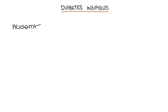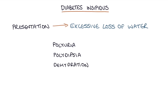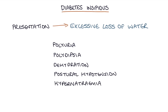The presentation is all linked to the excessive loss of water in the urine, so patients have polyuria or excessive urine production, polydipsia or excessive thirst, dehydration, postural hypotension so their blood pressure drops as they stand up, and if you check their blood tests they'll also have hypernatremia, or high sodium concentration in the blood.